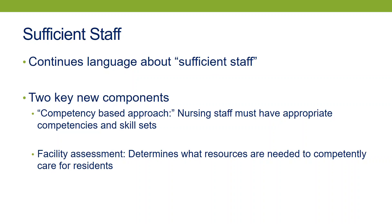The question then becomes: how does the facility determine how much staff is enough and what the right competencies and skill sets are? The answer in the regulations is that the facility does this by conducting a facility assessment. The goal is to give the facility a way to determine what resources it needs to competently care for its residents. This assessment is a new element found under the section on administration, and CMS views it as a critical factor in guiding how the facility operates.